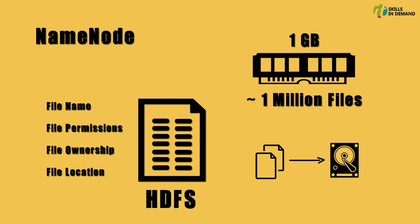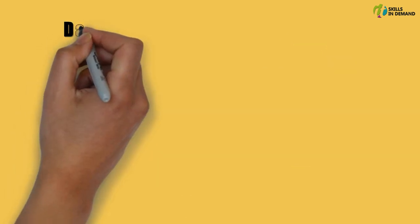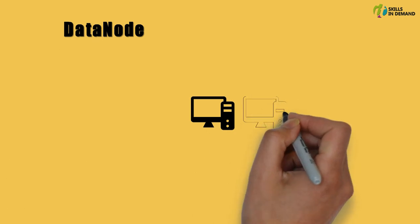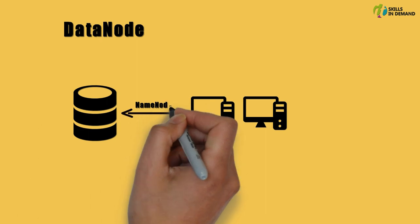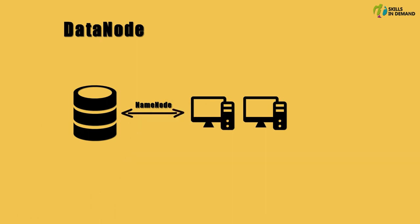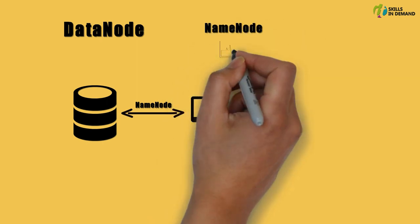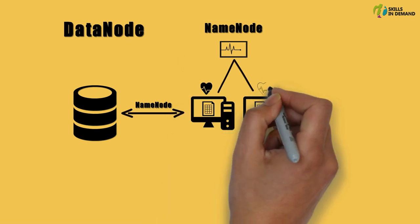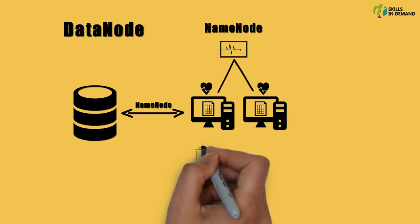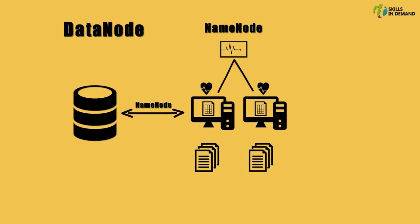Now let us try to understand the functionality offered by the data nodes. The data nodes are responsible for storing and retrieving the data as instructed by the name node. The data nodes periodically report back to the name node with their current status and the list of all the file blocks they are storing, through something called a heartbeat. The data node stores multiple copies for each file that is present within the Hadoop distributed file system.